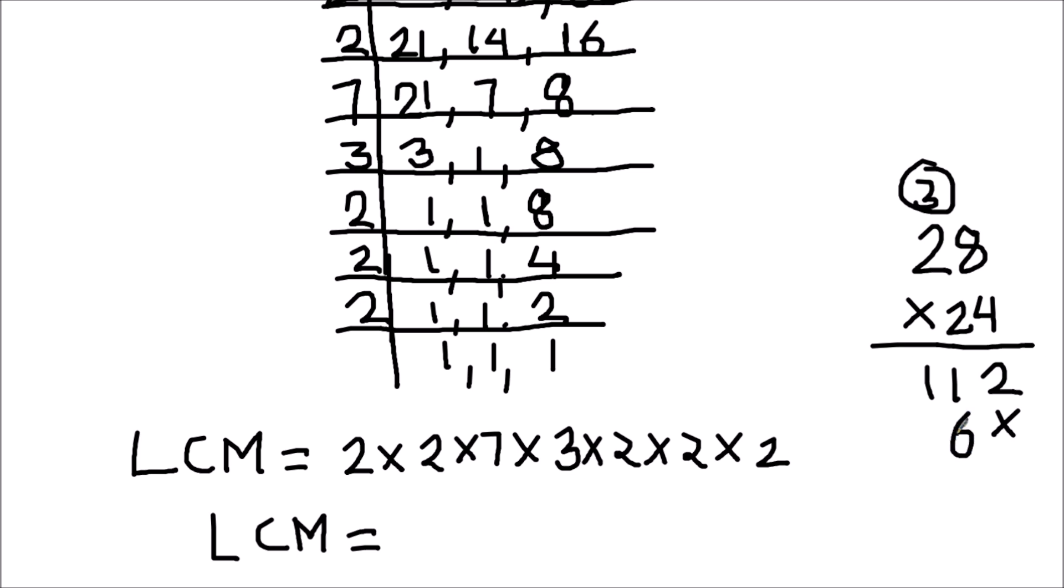Now 2 times 8 is 16. 2 times 2 is 4. 4 plus 1 is 5. Add the two numbers together. That's going to be 2, 7, and 6. So 672.